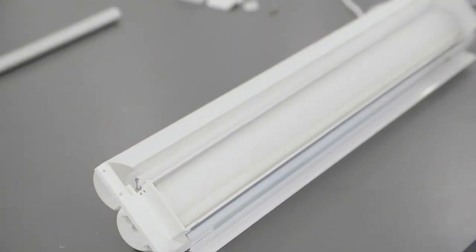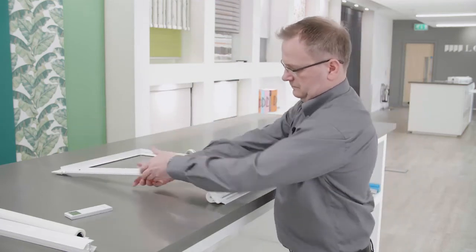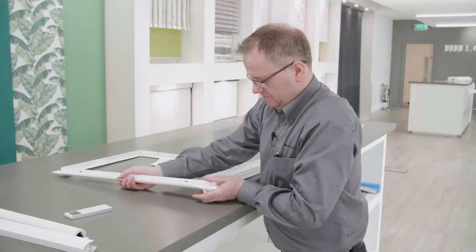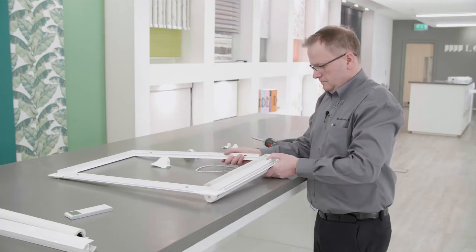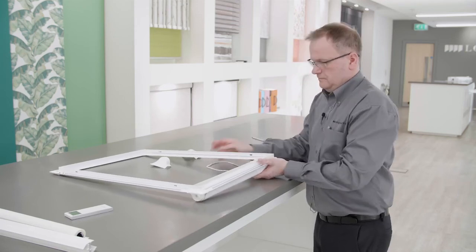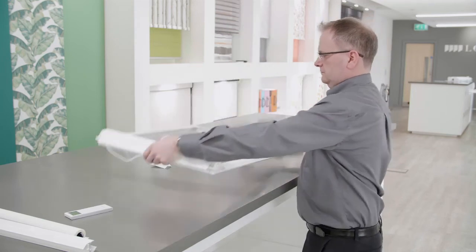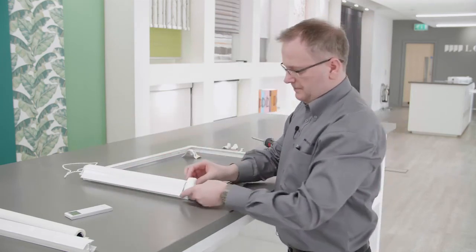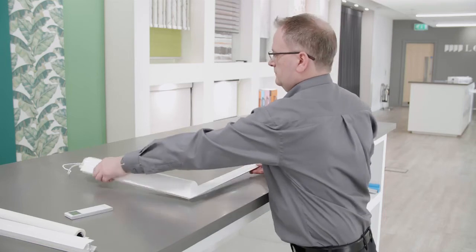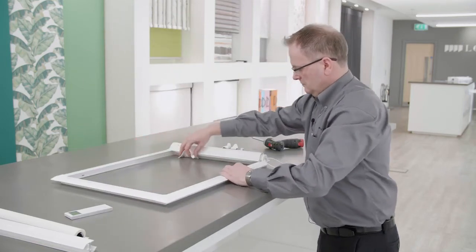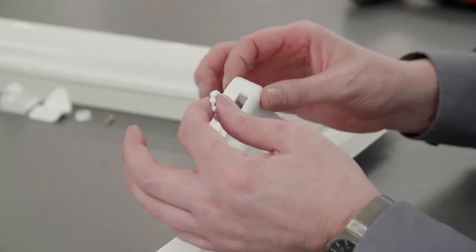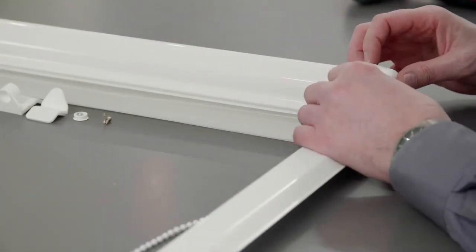Take the bottom section of the Perfect Fit frame and slide the top corners together. Put the end cap over the idle end. Fit the end cap over the idle end and pass the chain through the control end cover. Put on the control end cover.